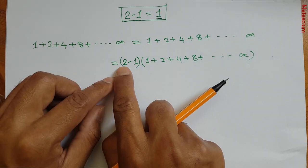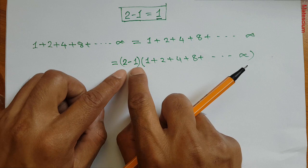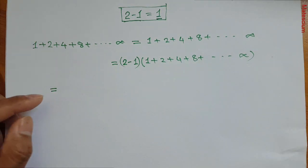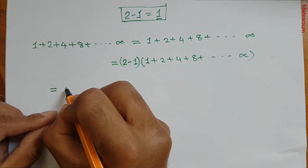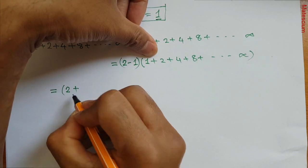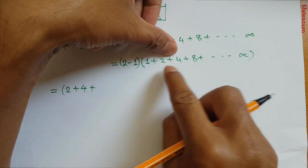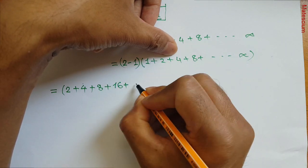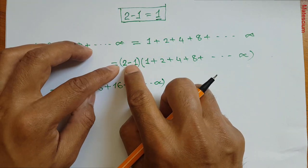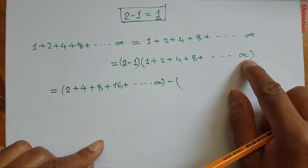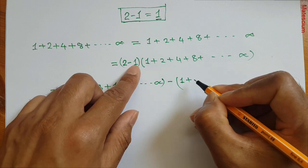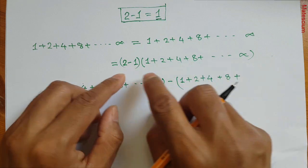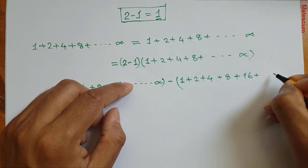Next, I can multiply this 2 with the whole series minus this 1 multiplied by that series. So: 2 times 1 is 2, plus 2 times 2 is 4, plus 2 times 4 is 8, plus 2 times 8 is 16, plus up to infinity. And then minus: 1 times 1 is 1, plus 1 times 2 is 2, plus 1 times 4 is 4, plus 1 times 8 is 8, plus 1 times 16 is 16, and so on to infinity.